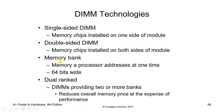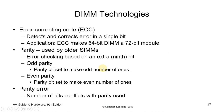A memory bank is what the processor addresses at one time — usually 64 bits wide. Dual-ranked DIMMs provide two or more banks, reducing overall memory price at the expense of performance. ECC (Error Correcting Code) detects and corrects errors in a single bit, making a 64-bit DIMM a 72-bit module because of the parity bit. Parity, used by older SIMMs, is error checking based on an extra 9th bit — odd parity sets the bit to make an odd number of ones, even parity sets it to make an even number of ones.